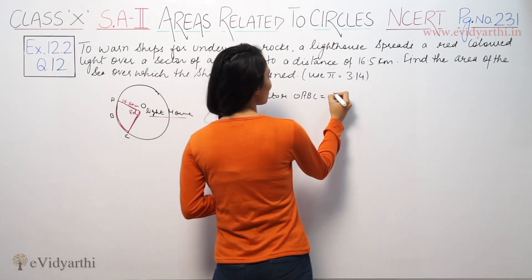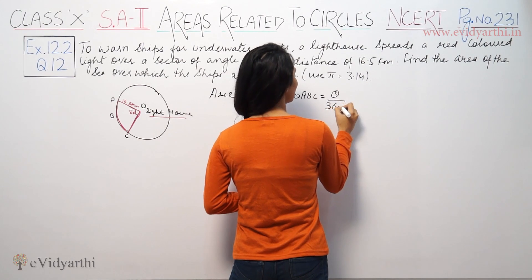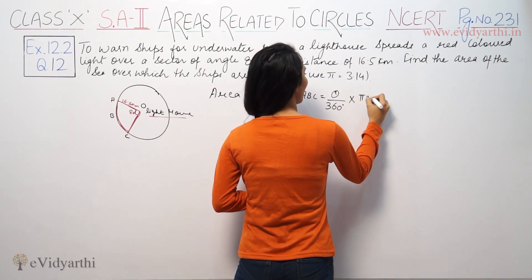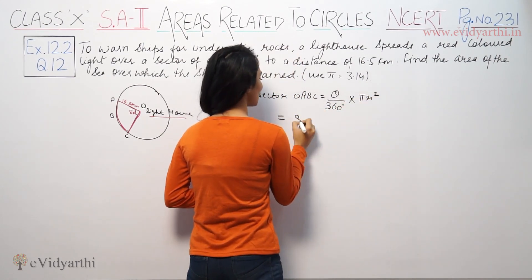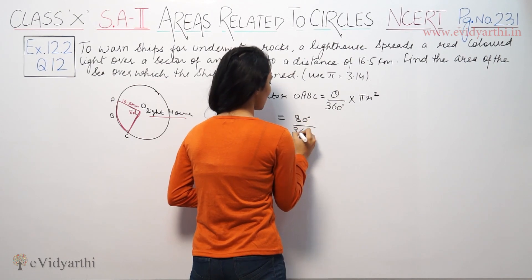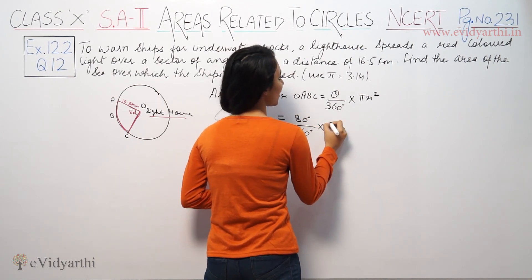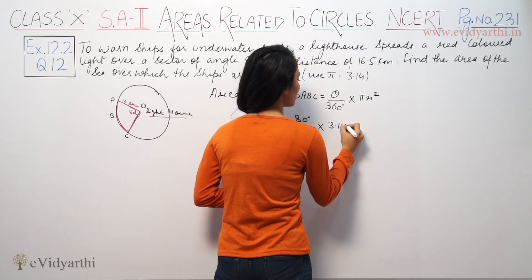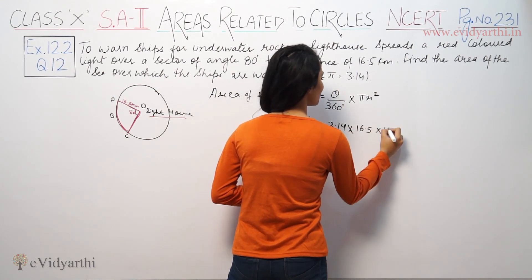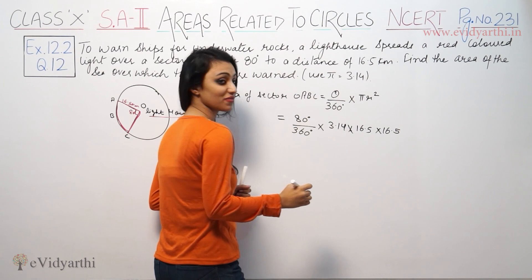Area of sector formula is theta by 360 degrees into pi r square. Theta is 80 by 360 degrees, pi value is 3.14, r square is 16.5 into 16.5.